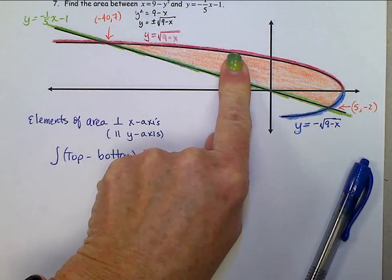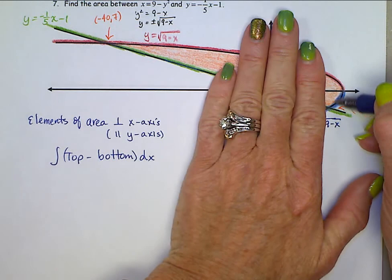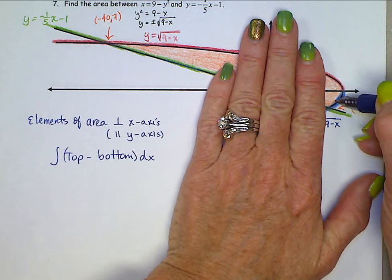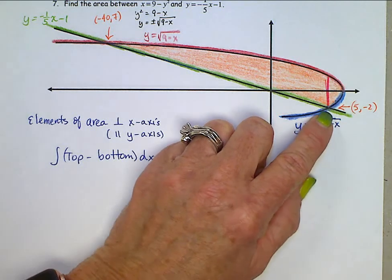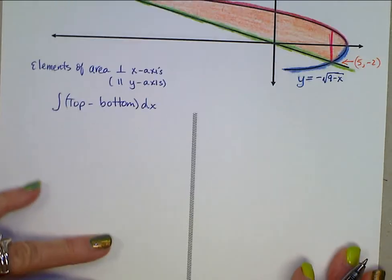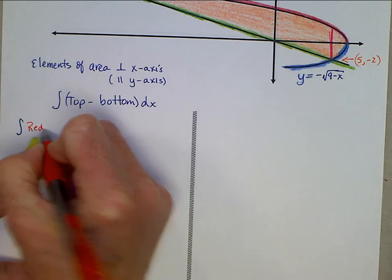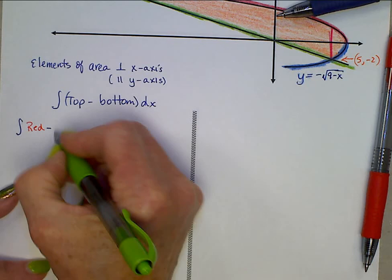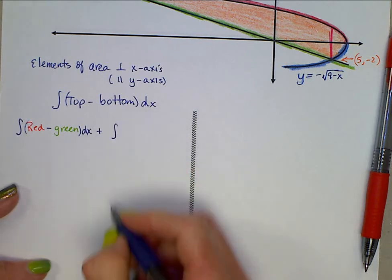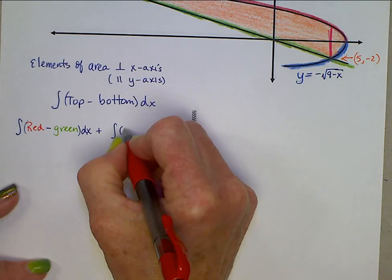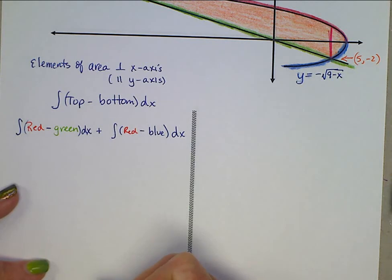Now when we look at this as top minus bottom, right here, top function is red, bottom function green. Still red and green. Still red and green. But what about all the way over here at this edge? So right over there, top is red, bottom is blue. That changes over from one to the other right here at that point of intersection.